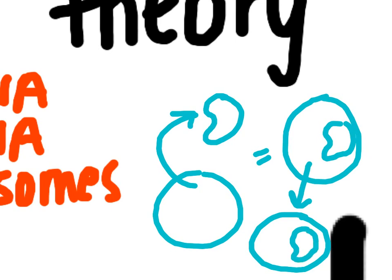So the way that we go from very simple prokaryotic cells to our complex eukaryotic cells that we have today, one of the theories is that we got there by these bigger cells engulfing smaller cells. That's the endosymbiotic theory.